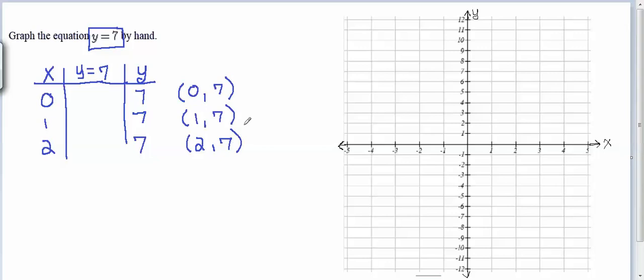Once we have three ordered pairs, we can graph those on our coordinate plane. So 0, 7, 0 is my x coordinate. Now go up to 7 for my y coordinate. There's the point 0, 7. Now the point 1, 7. So I go to 1 in the x direction and 7 in the y direction. And now the point 2, 7. So I go to 2 in the x direction, 7 in the y direction. I'm clearly seeing a straight line pattern there, so I can connect those with a straight edge. Draw a line connecting those three points.